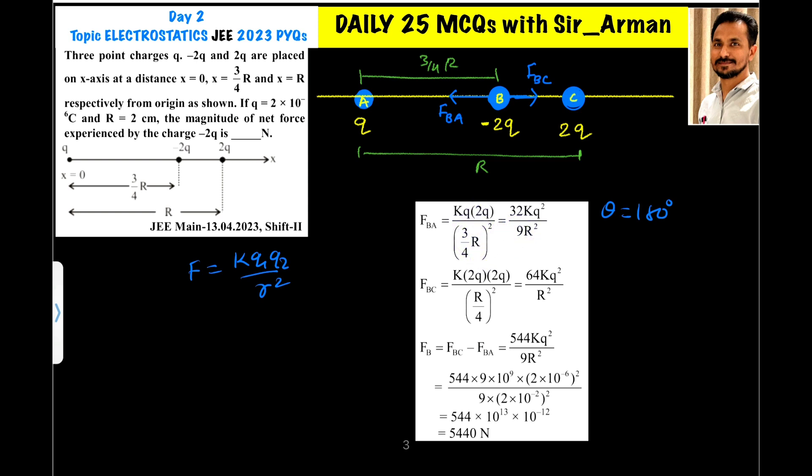Similarly, the force on B by C is in this direction, so it is k, then q1 is 2q, then it is 2q, so it is k × 2q × 2q, and the distance between these two is r/4. So here it is (r/4)². Again here, 2 × 2 = 4, and here 4² = 16, 16 will go up, so 16 × 4 = 64. So it is 64kq²/r².